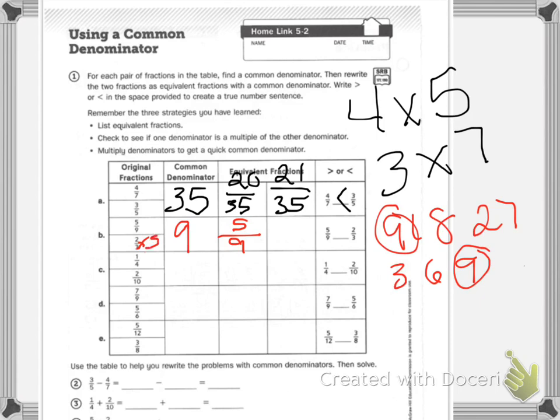Whatever I do to the top, I do to the bottom. So 2 times 3 is 6, and 3 times 3 is 9. So 5 ninths is less than 6 ninths.